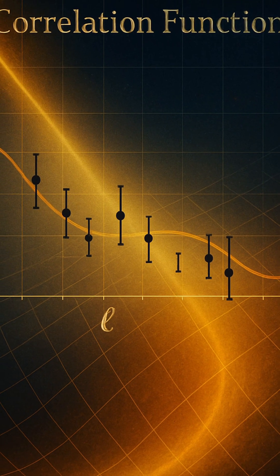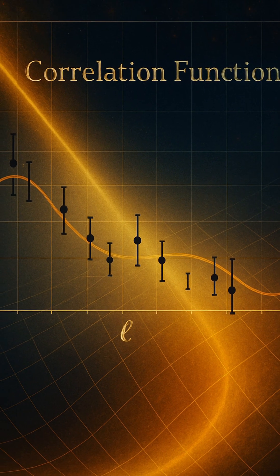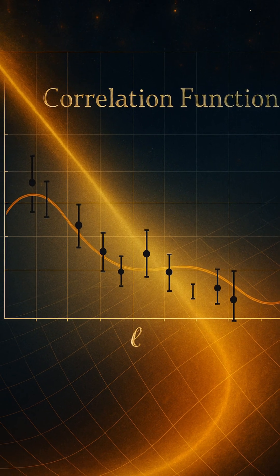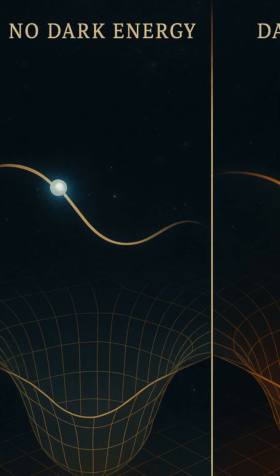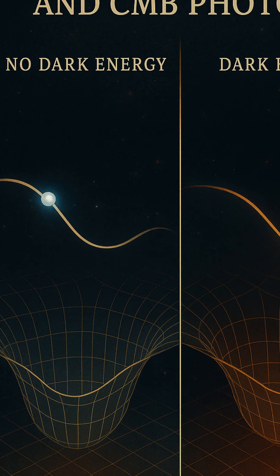To understand the ISW effect, imagine a CMB photon passing through a massive structure, like a galaxy cluster or a cosmic void. These regions create gravitational potential wells due to their mass, slightly warping space-time.